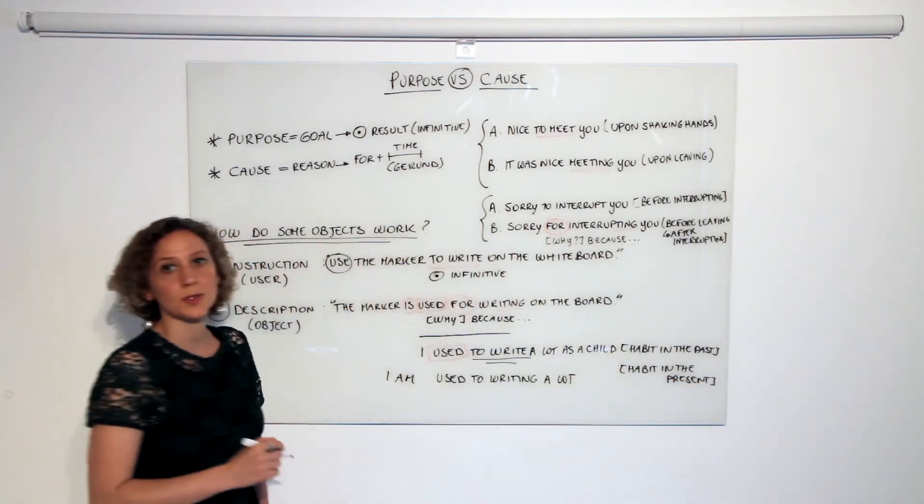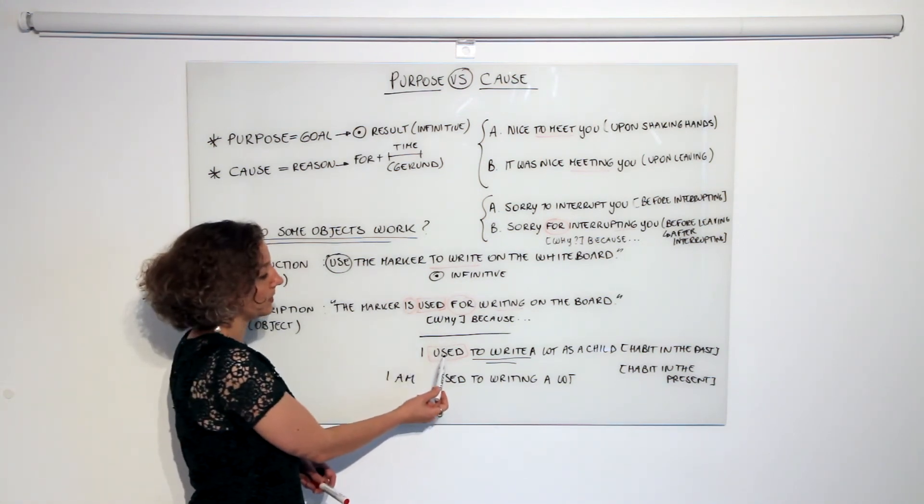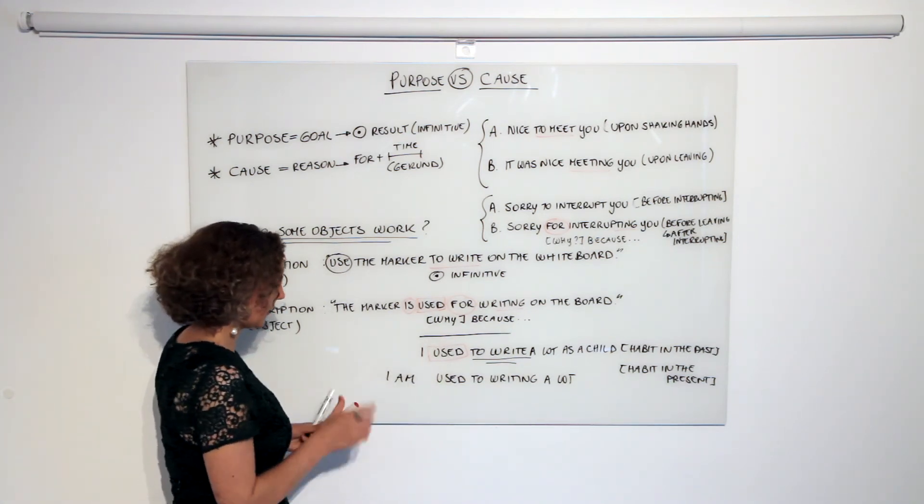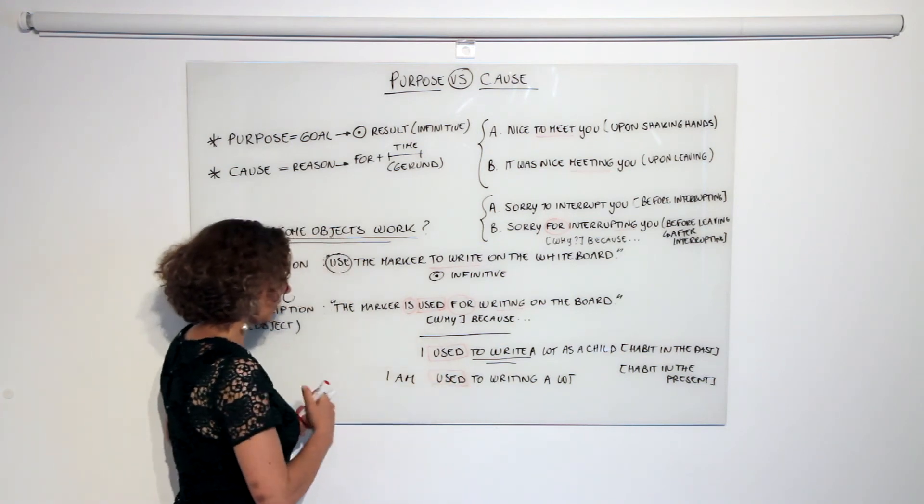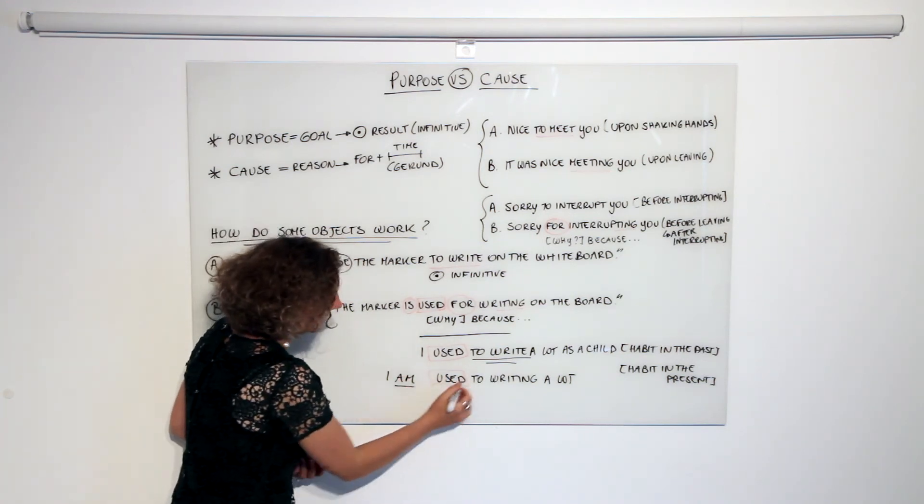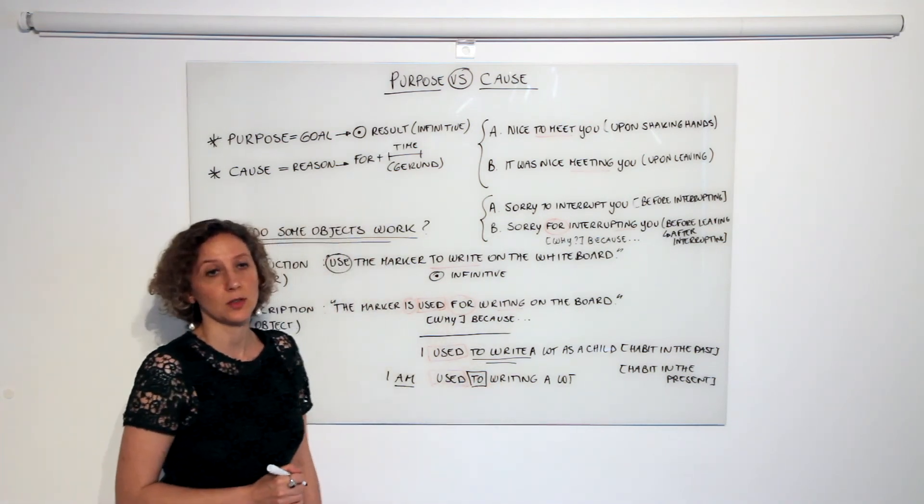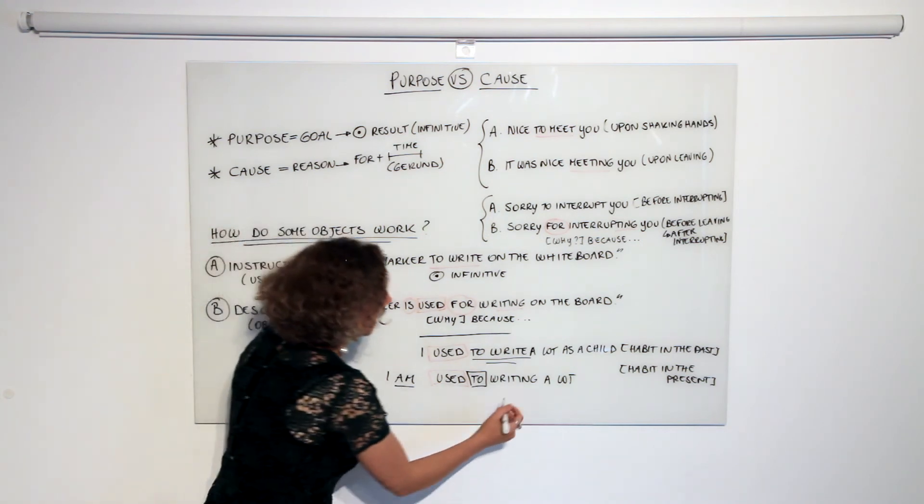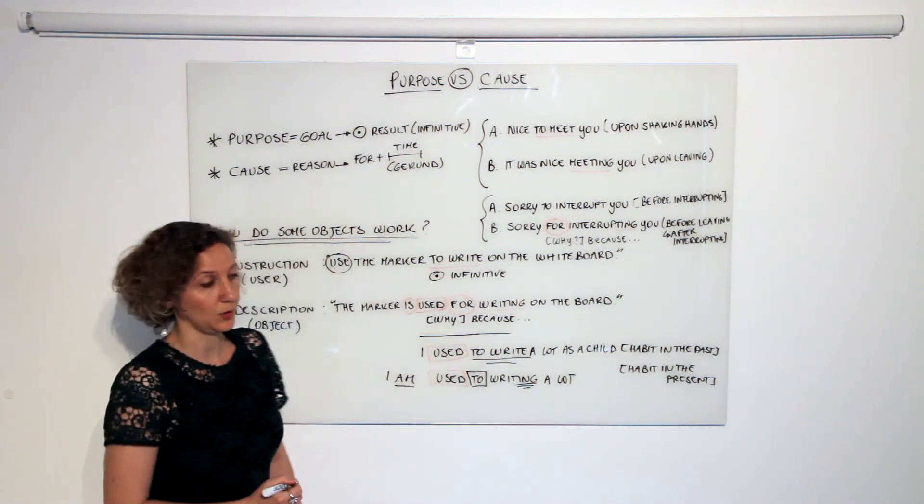Why such a different structure? Well, because here, just like I explained, we have a verb in the past followed by infinitive. Here, by contrast, 'used' is not a verb - this is an adjective. The verb here is the verb 'to be,' and this 'to' here is not a particle of the infinitive but is a preposition, and just like we explained last time with verb patterns, every time I have a preposition followed by a verb, the verb is in the gerund.